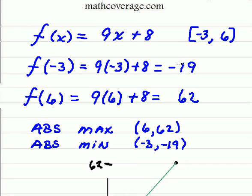And to actually find what these values are, you're just going to test each endpoint. So f(-3), after plugging it into the function, we get -19. And then we plug 6 in and we get 62.